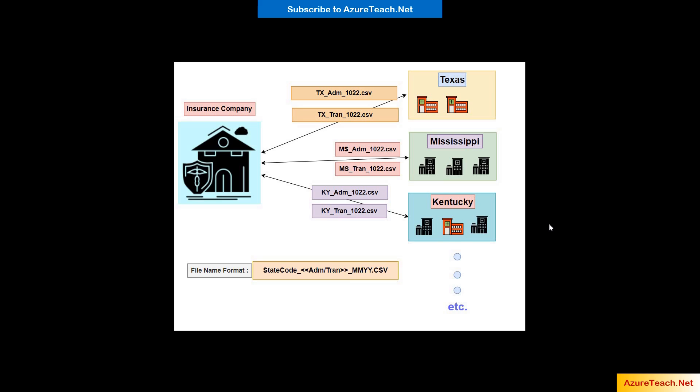So we have created template files with all the required columns. These hospitals download the template files using our frontend application which calls our API. As we have multiple files, we are returning those files in a zip format. Those hospitals will unzip the files, fill up the data, and upload the files back to our insurance client. Let us begin with the demo.